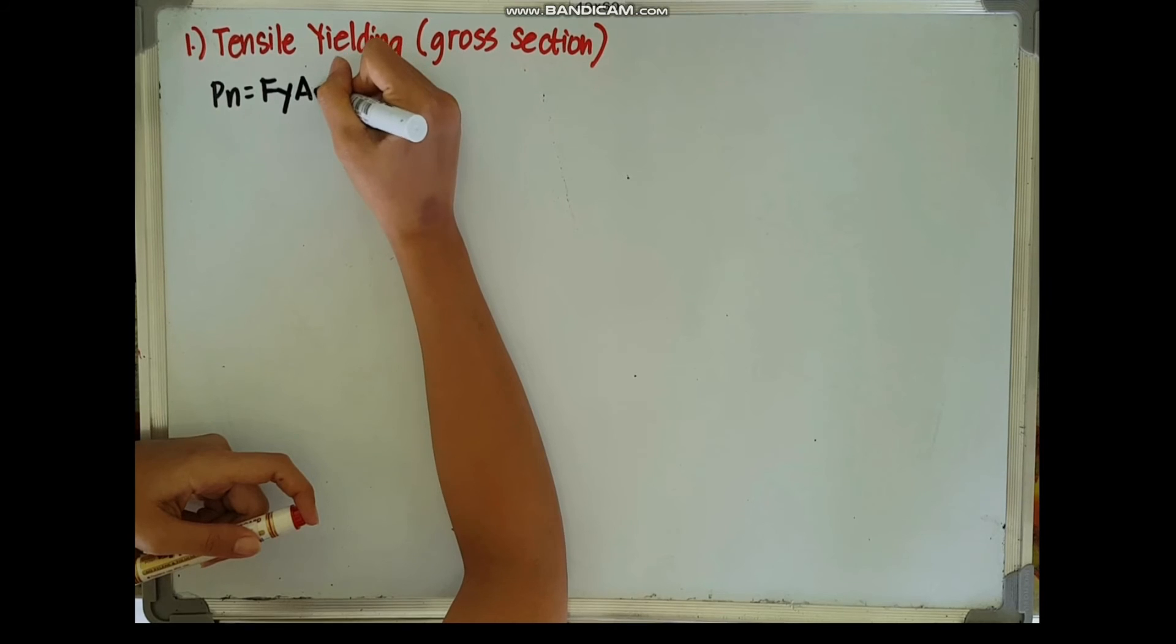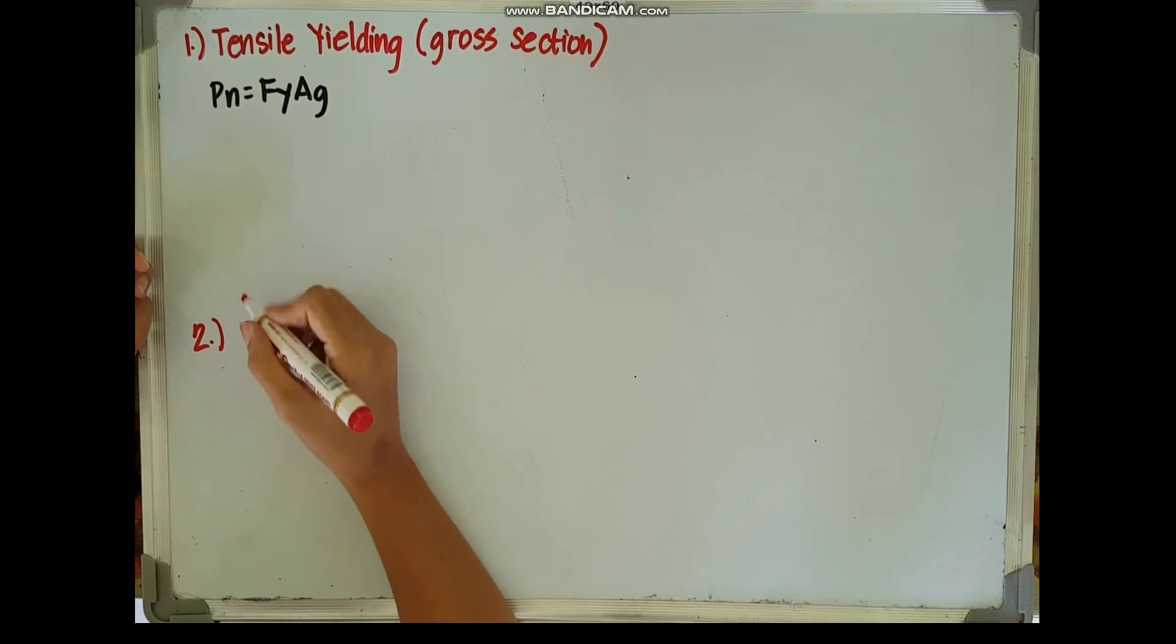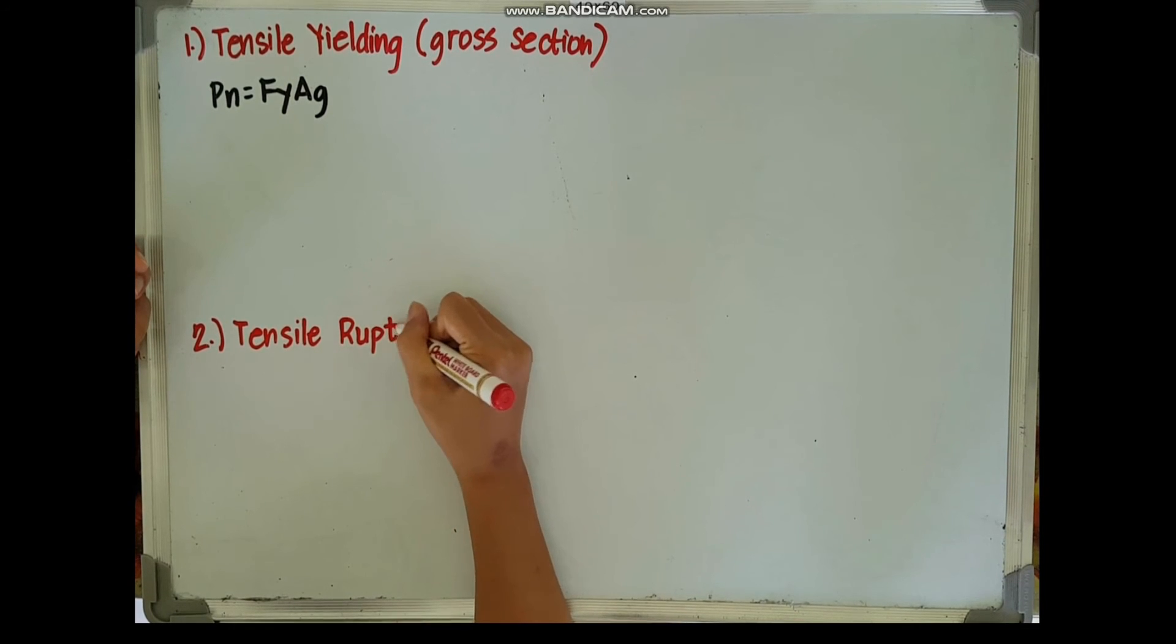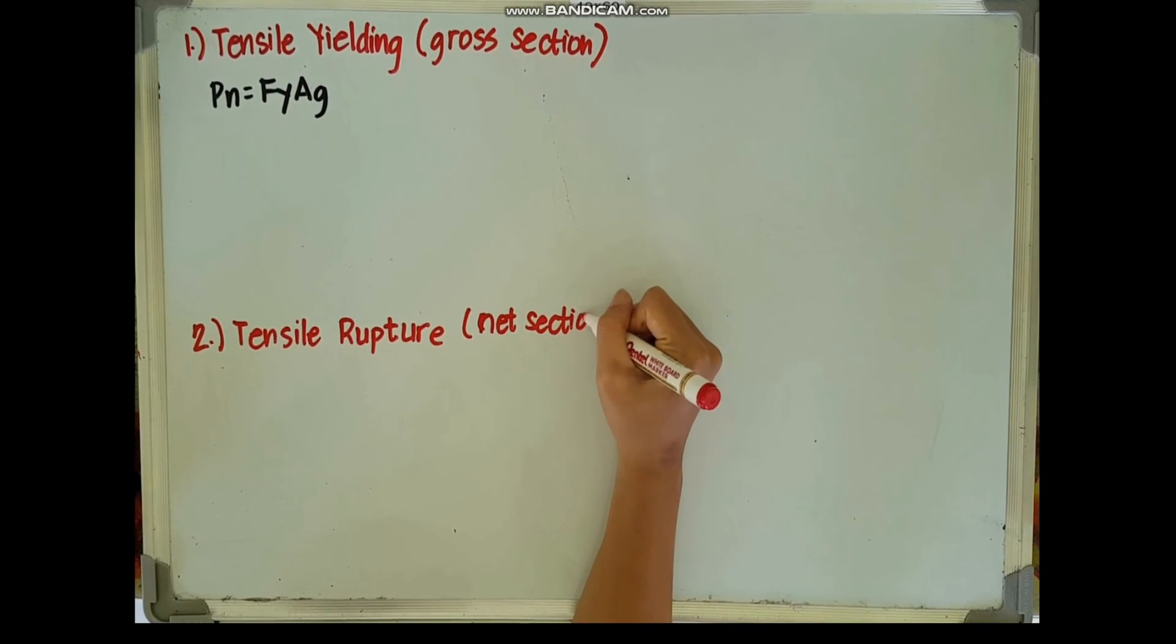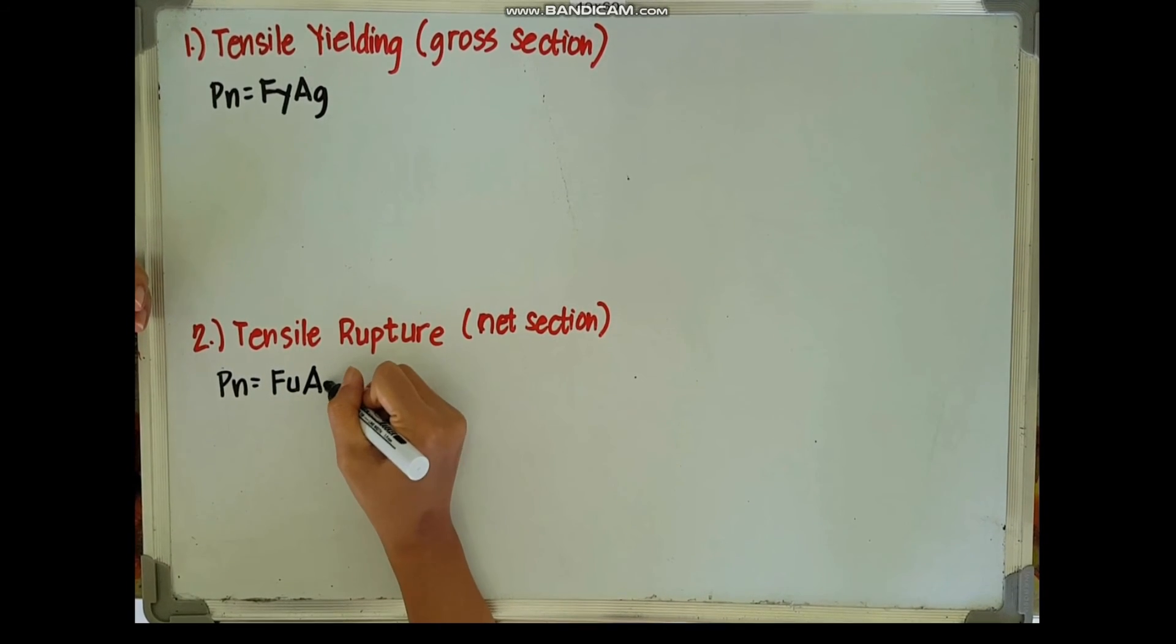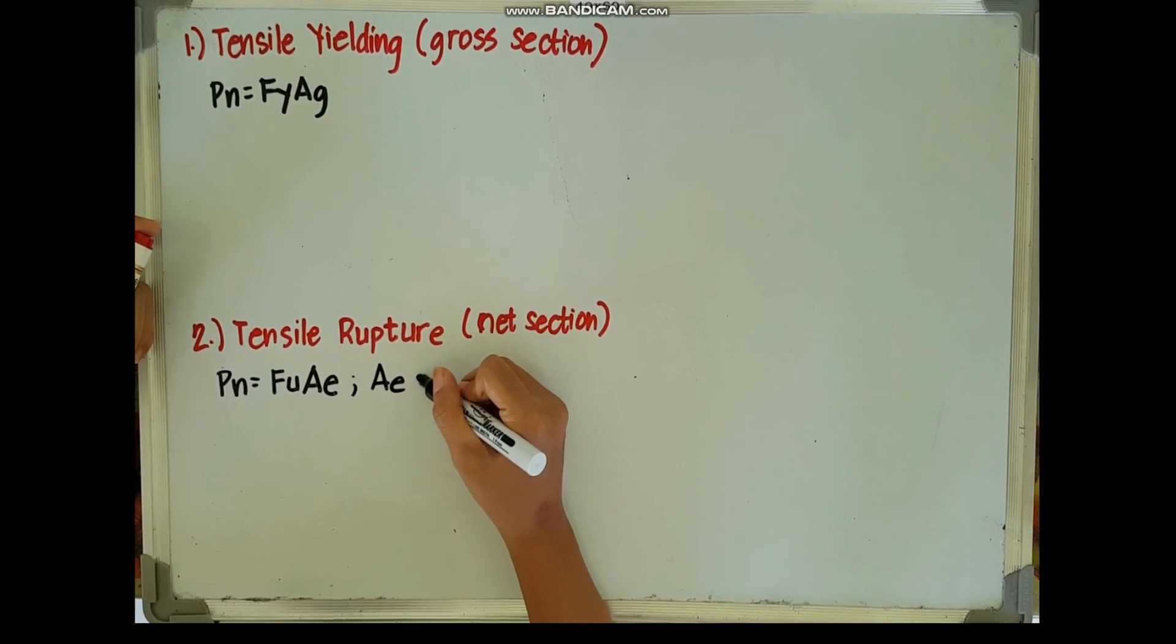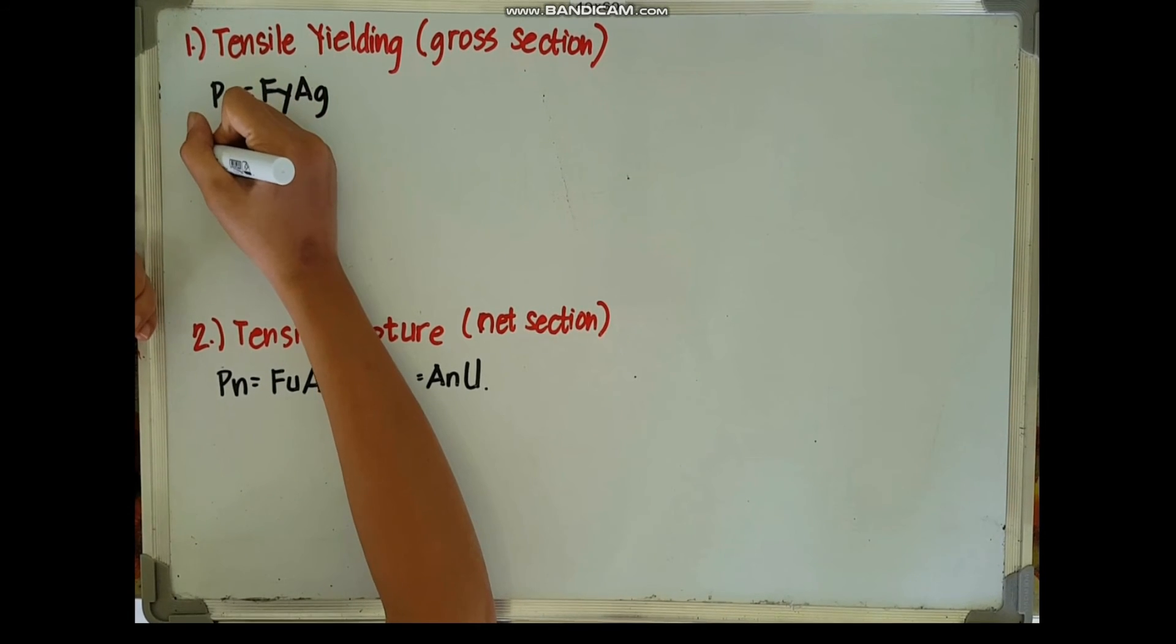And the second one is the tensile rupture which occurs on the net section, wherein our nominal tensile strength is equal to the minimum tensile strength multiplied by the effective net area. The effective net area is equal to the net area multiplied by a certain shear lag factor, which can be determined in our NSCP 2015 and we will encounter that later.